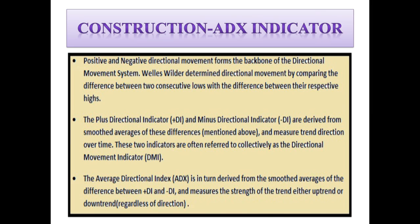The positive and the negative directional movement forms the backbone of the directional movement system. Welles Wilder determined the directional movement by comparing the difference between two consecutive lows with the difference between their respective highs. The Plus Directional Indicator, also known as Plus DI, and the Minus Directional Indicator, also known as Minus DI, are derived from smoothed averages of these differences and measure the trend direction over time. These two indicators are often referred to collectively as the Directional Movement Indicator. The ADX is in turn derived from the smoothed averages of the difference between Plus DI and Minus DI, and it measures the strength of the trend — either uptrend or downtrend — regardless of the direction.